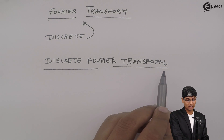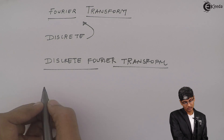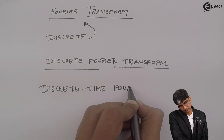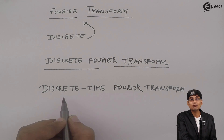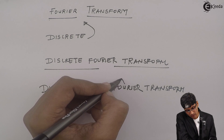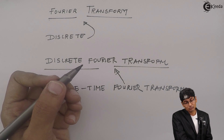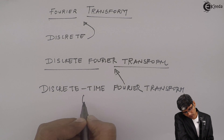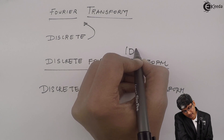Hence, the chapter name is discrete time discrete Fourier transform. Discrete Fourier transform has been originated from discrete time Fourier transform. Previously we were having discrete time Fourier transform, and then we progressed to discrete Fourier transform — a new tool called discrete Fourier transform. Discrete time Fourier transform is written as DTFT whereas discrete Fourier transform is written as DFT.